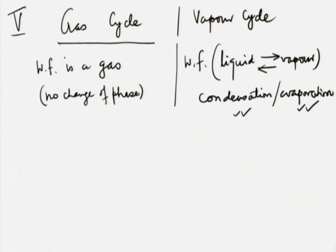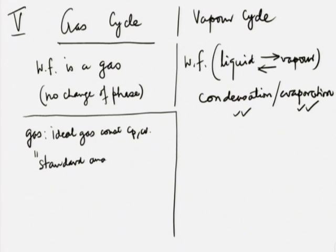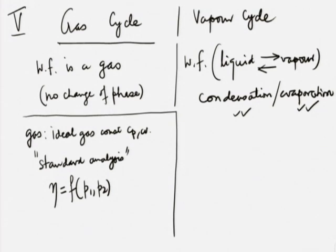From a student point of view, there is an advantage in a gas cycle. In a simple situation, the gas can be assumed to be an ideal gas with constant Cp and Cv, in which case we have simple equations and it is possible to do what is called a standard analysis. Assuming the working fluid to be an ideal gas, you get neat expressions for efficiency as some function of P1, P2 or T1, T2 — simple expressions; just substitute in a calculator and within half a minute you have the answer for efficiency and many other parameters.